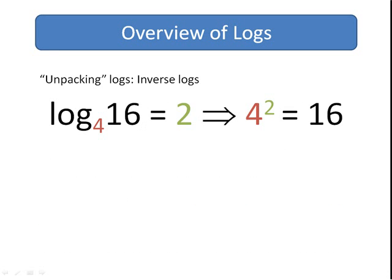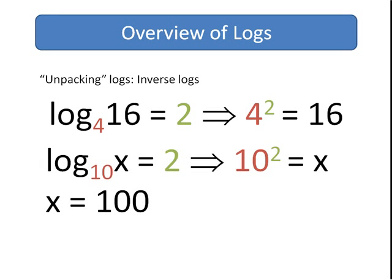We've seen how to get a log of a number. Log to the base 4 of 16 was 2 because 4 squared was 16. But what happens if we don't know the answer? Here we have log to the base 10 of x is equal to 2. How do we work out x?